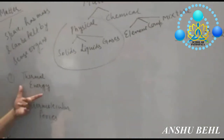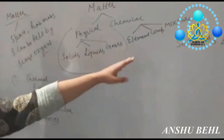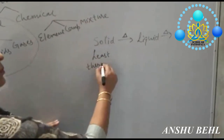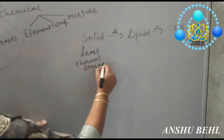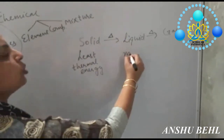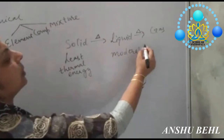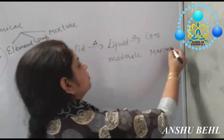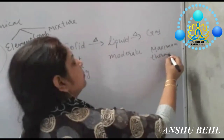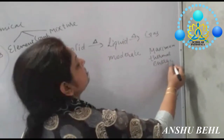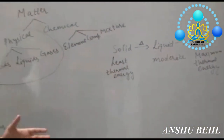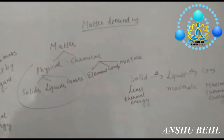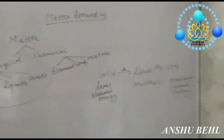Talking about thermal energy: in solid state, thermal energy is least. We provide heat energy to turn it into liquid, so liquids have a moderate amount of thermal energy, and gases have the maximum thermal energy. So if the question is which state has maximum thermal energy, the answer is gaseous state; and minimum thermal energy is in the solid state.